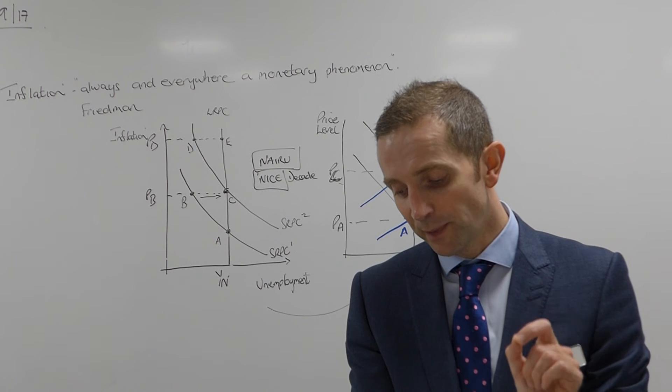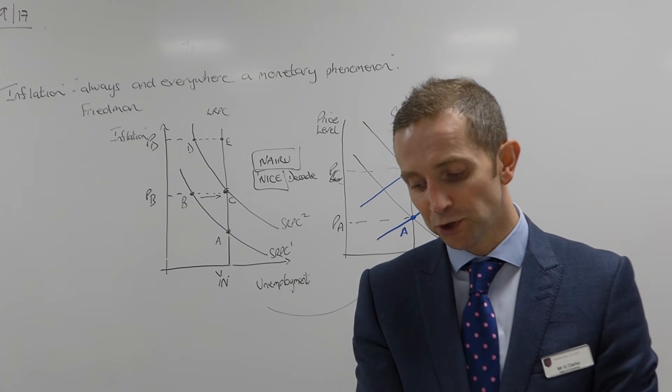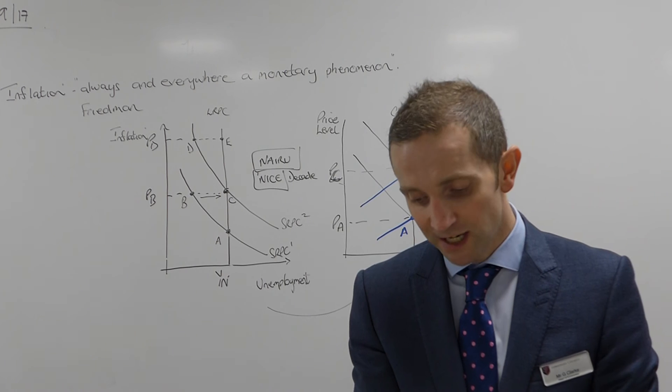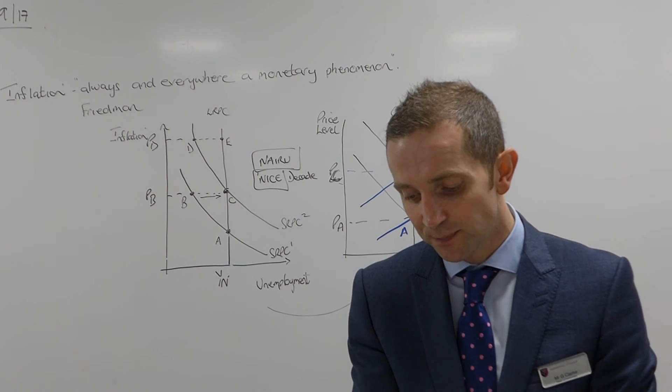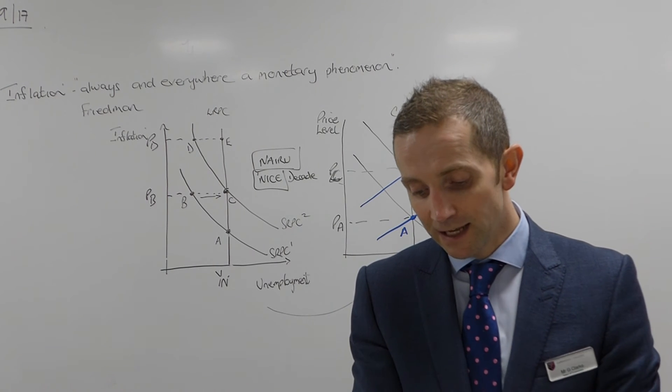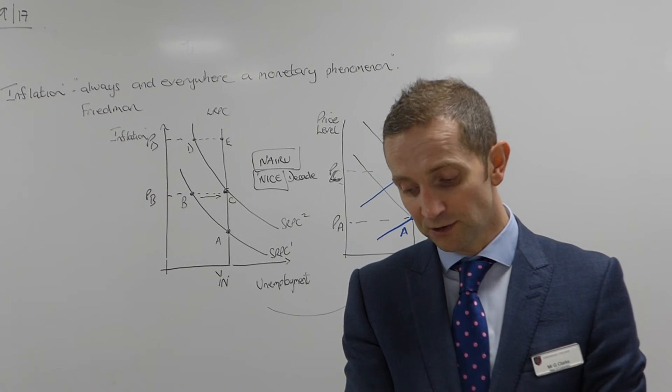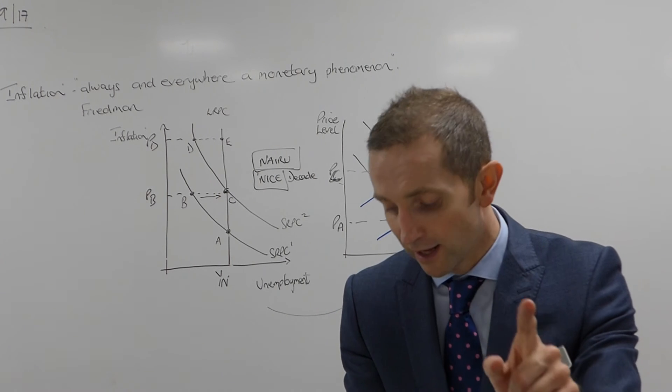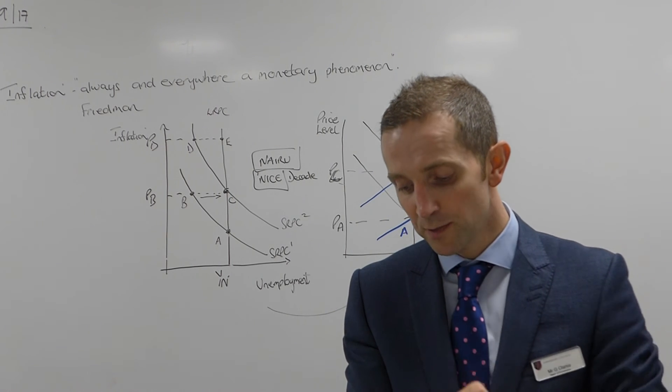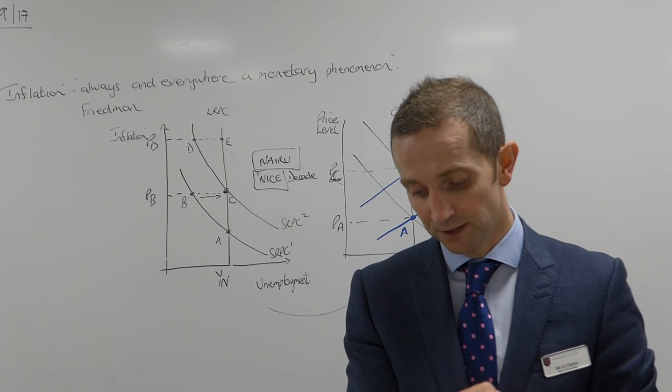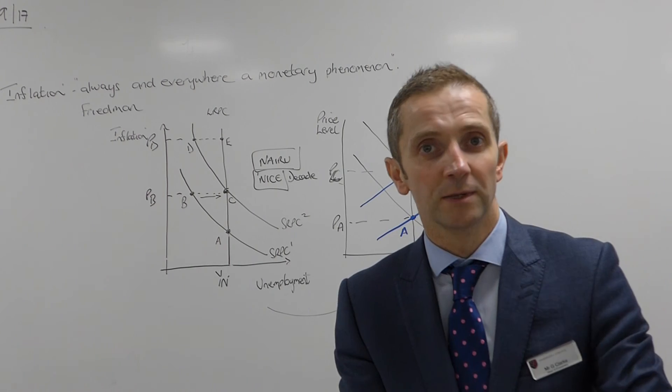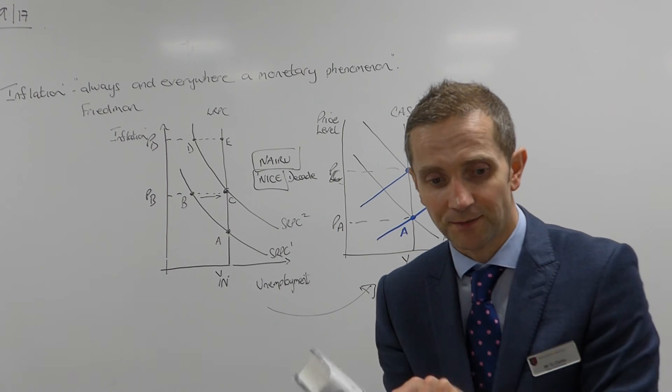If people expect that the government will keep trying to push unemployment down, then wages and prices will chase each other up in an escalating spiral. In the end, unemployment will return to its natural rate, and accelerating inflation will have achieved nothing by way of a permanent reduction in unemployment. This was the fate of the British government, after the experience of rising inflation and unemployment in the 1960s and 70s.